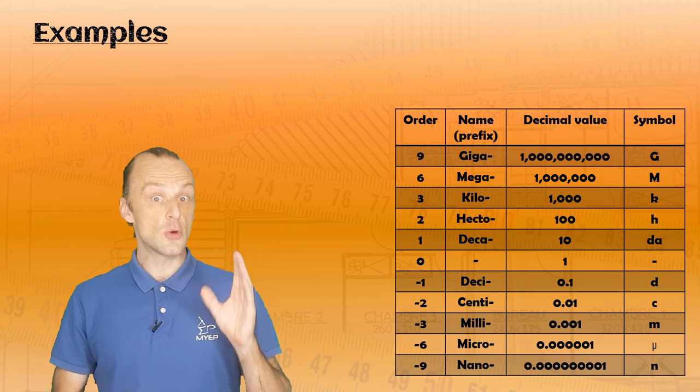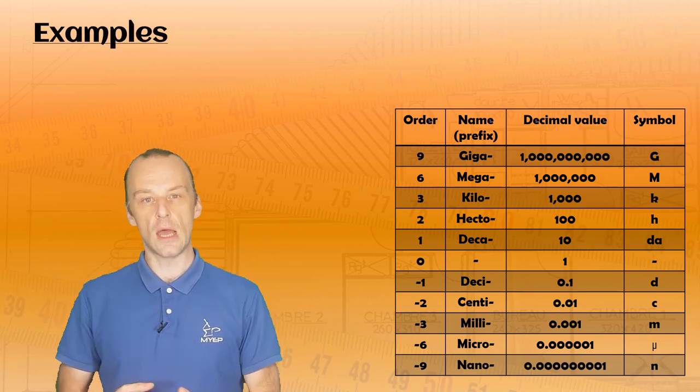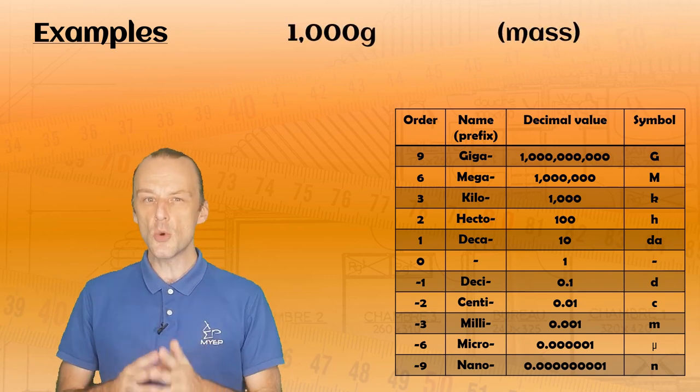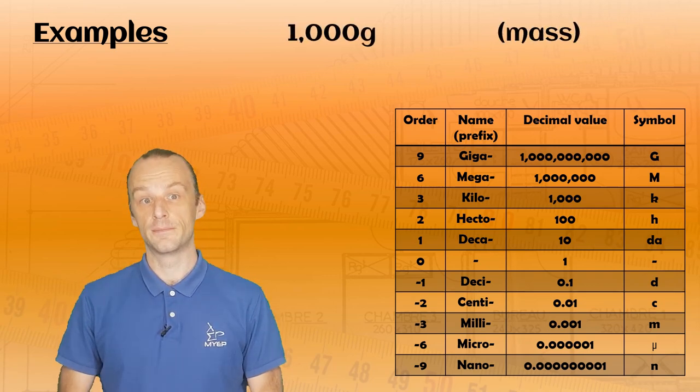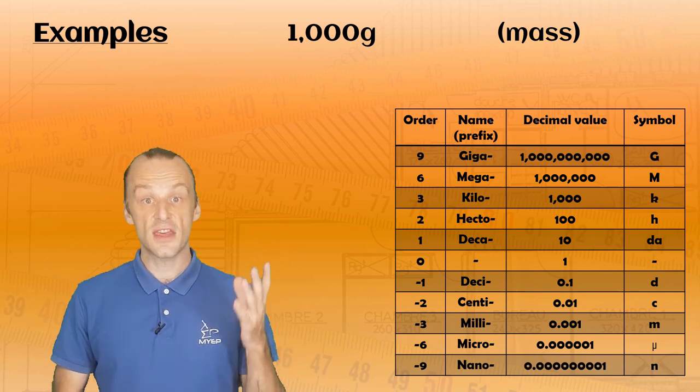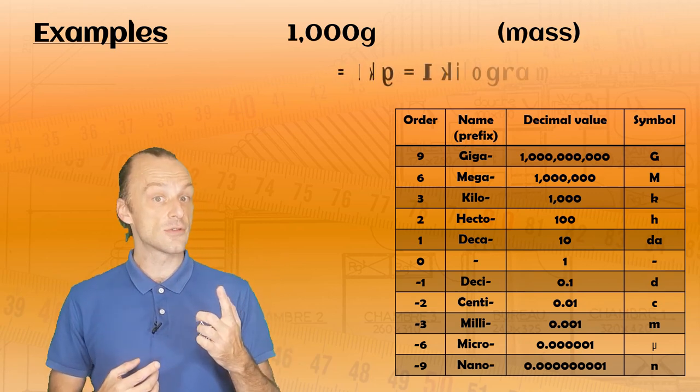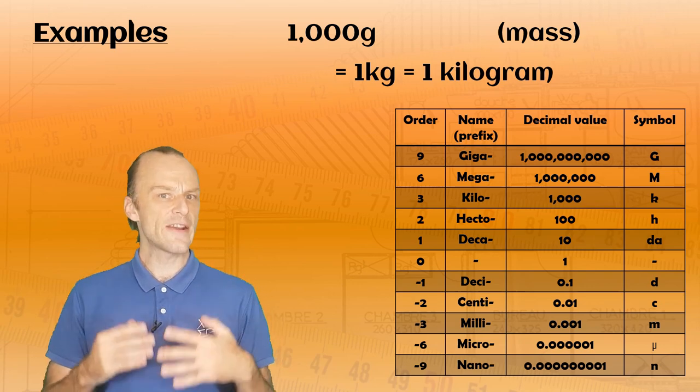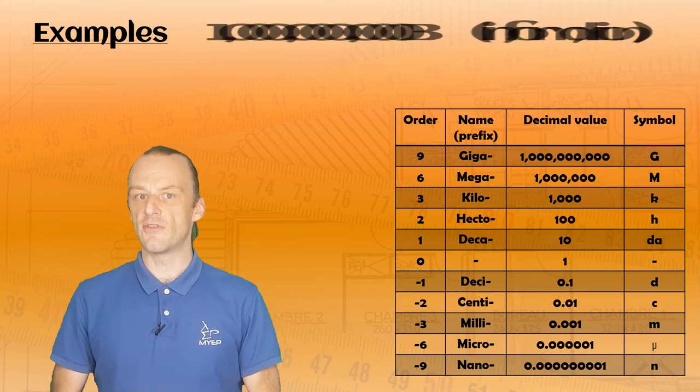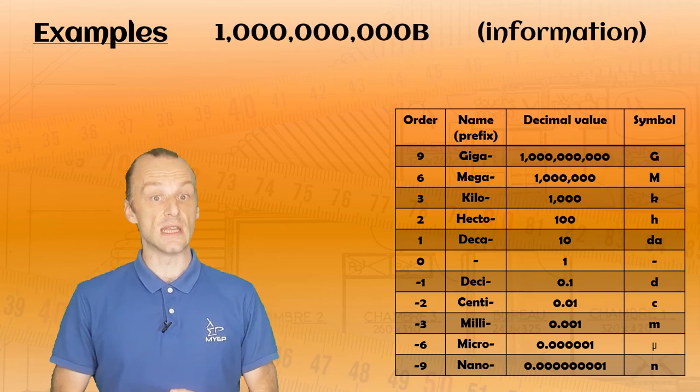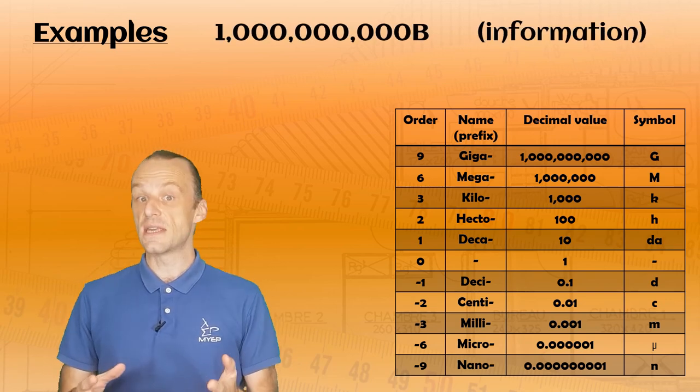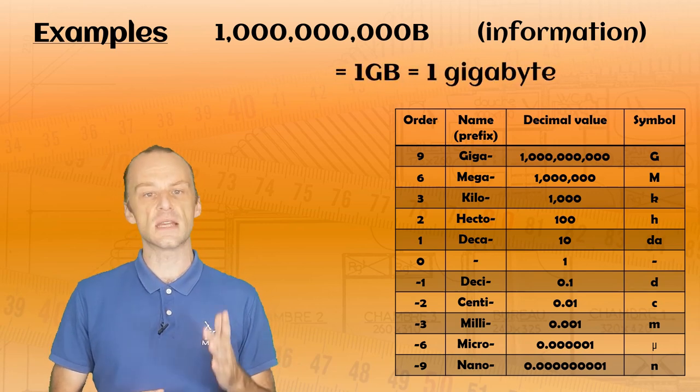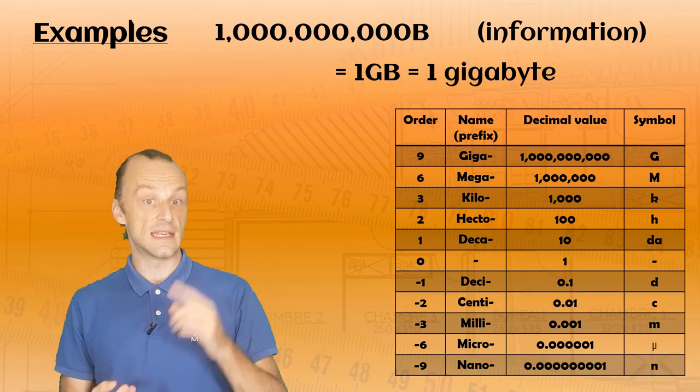Let's do a few quick examples, so be ready to pause if you like. If you have one thousand grams of mass, which order of magnitude are you best off using? The answer is the kilogram. One thousand grams is one kilogram. Moving on, what about a billion bytes of information? Which of the orders should we be using here? I can tell you that this one is the gigabyte. That's right, a billion bytes of information is one gigabyte.